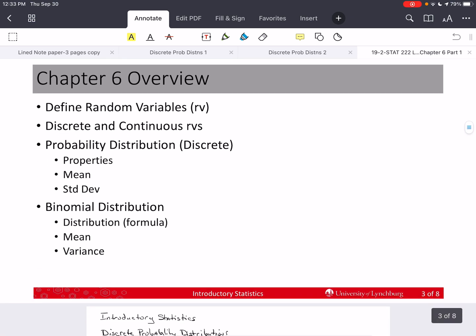In this chapter, we're going to discuss discrete probability distributions. In order to do that, we're going to have to define random variables and talk about the difference between discrete and continuous random variables, talk about probability distributions, especially discrete distributions in this chapter, their properties, the mean, how to calculate the mean and standard deviation or variance, and then we're going to talk about a very special discrete distribution called the binomial distribution and go over its formula and the mean and variance of it.